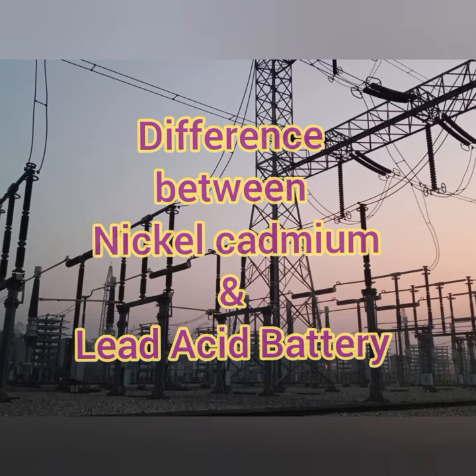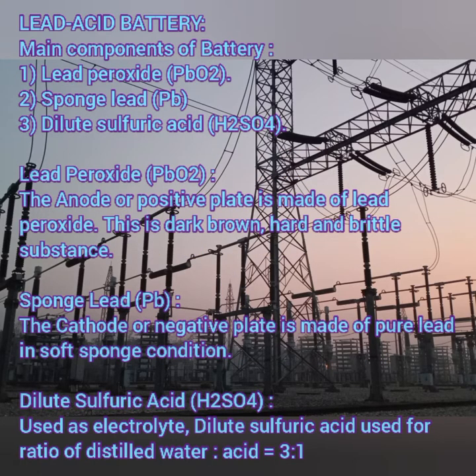Lead acid batteries are used for low voltage, low purpose applications in households and areas where very less power is required. Coming up to the overview of lead acid batteries: the main components are lead peroxide, sponge lead, and dilute sulfuric acid.